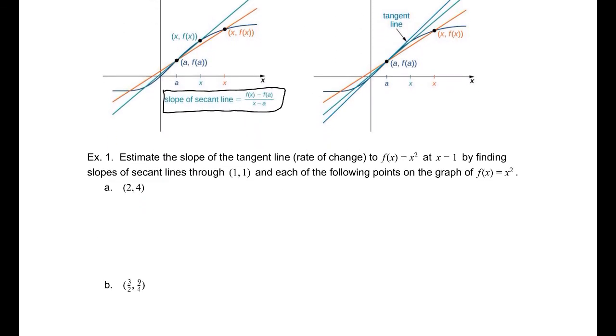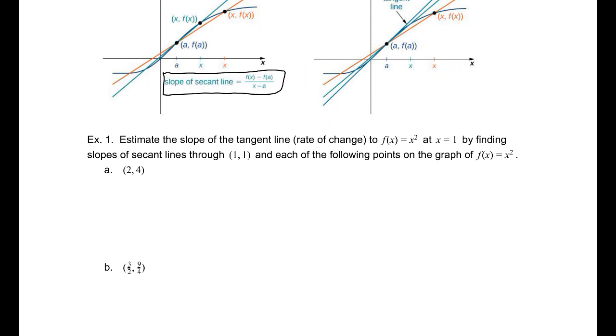Let's estimate, in example one, the slope of the tangent line, or the rate of change, to f(x) = x² at the point x = 1. But we're going to find the slope of secant lines through (1, 1) and some other points. This equation for the slope of the secant line is [f(x) - f(a)]/(x - a). We're actually given the outputs here. In this case, the point (1, 1) is our (a, f(a)).